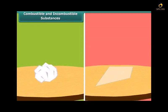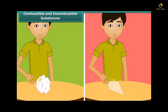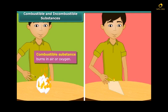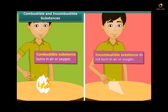There are two types of substances. Some substances catch fire and burn, while others do not catch fire. The boy is bringing a lighted matchstick close to the paper and glass. Paper catches fire and so it is called a combustible substance. Glass does not burn, and such substances which cannot burn in air or oxygen are called incombustible substances.